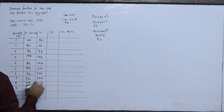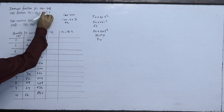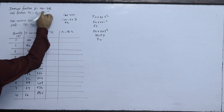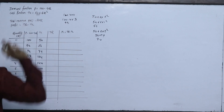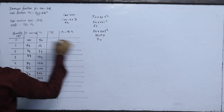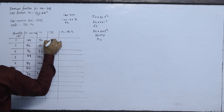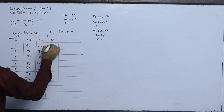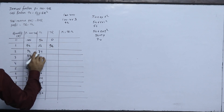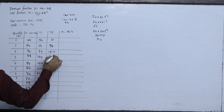For total revenue — price into quantity: when q is 0, TR is 0; when q is 1, TR is 96; when q is 2, TR is 184; when q is 3, TR is 264; then 336, 400, 456, 504, 544, 576, and 600.